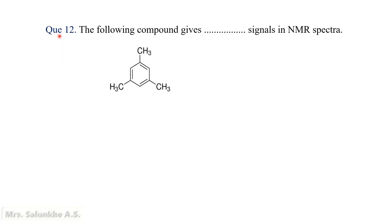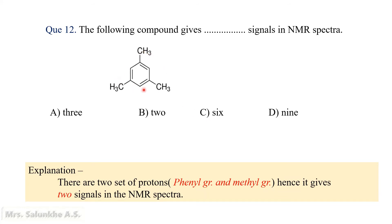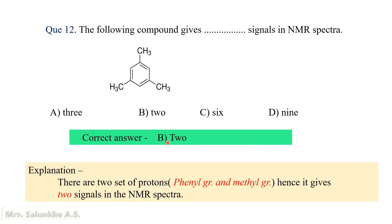Question 12: The following compound gives how many signals in NMR spectra? Options: 3, 2, 6, or 9. In that compound, there are 2 sets of protons: methyl group protons and phenyl group protons. All methyl group protons are equivalent, forming one set, and the phenyl group protons form another set. Since there are 2 sets of protons, this compound gives 2 signals in NMR spectra. The correct answer is B, 2 signals.